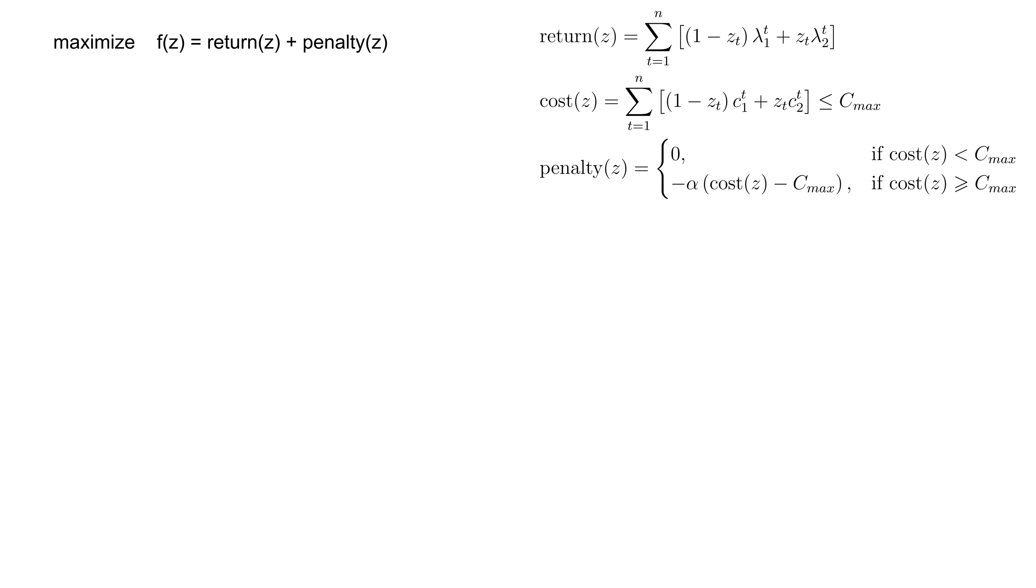As you may notice, the larger is the difference between the allowed cost and total cost, the bigger is the penalty. And the objective function, which we are going to maximize, is the total return plus penalty. And the penalty is either zero or a negative number.